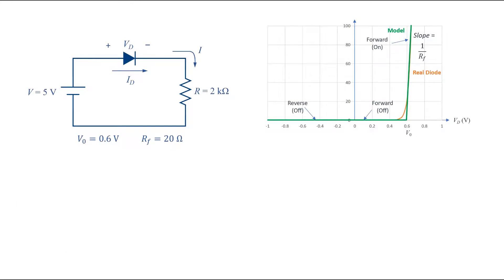Now let's see how we can use this model to calculate the current in a circuit. The diode here is in forward bias and the applied voltage is more than V0. Therefore the diode is in on condition and can be replaced by its equivalent circuit.